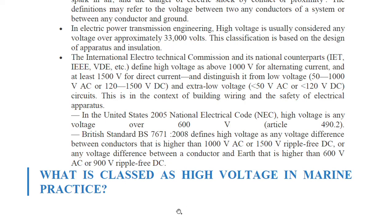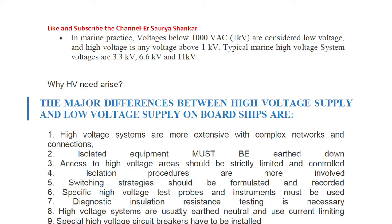In marine practice, voltages below 1000 V AC — that is 1 kV — are considered low voltage, and high voltage is any voltage above 1 kV. Typical marine high voltage system voltages are 3.3 kV, 6.6 kV, and 11 kV.